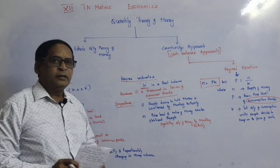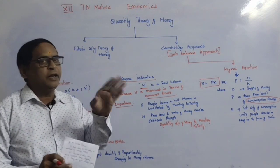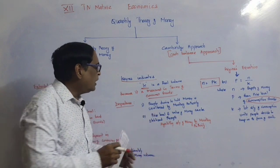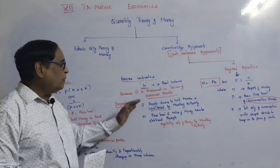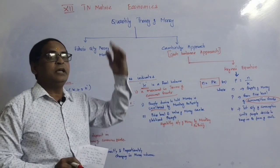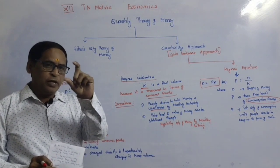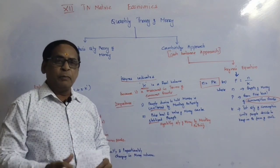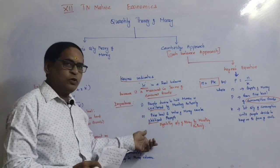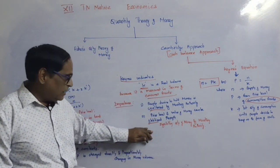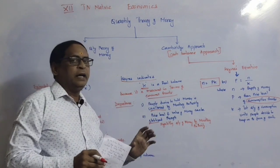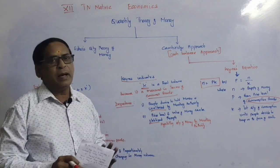People decide to hold money. If the people's desire to hold money is unaltered by monetary authority, then the price level and value of money can be stabilized. The monetary authority — the central bank or Reserve Bank — regulates the quantity of money, and that is why the price level and value of money can be stabilized. Consumer goods are concentrated; this is the real balance approach of Keynes.